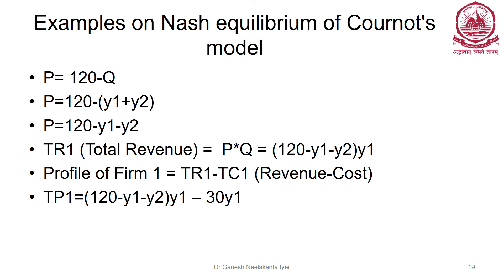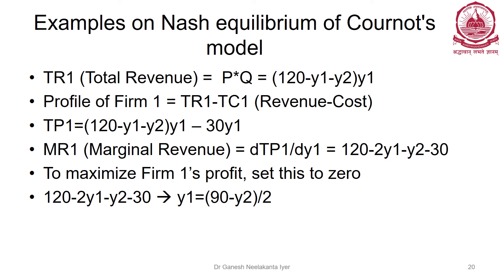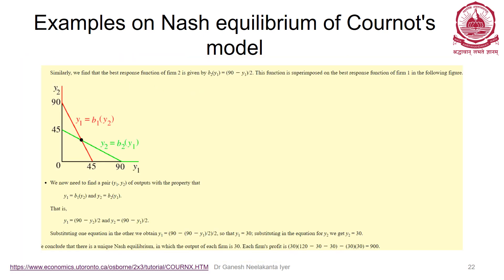Maximizing profit means taking the derivative of profit for firm one with respect to y1 and setting it to zero. Repeat the same for player two to get two equations and two unknowns, y1 and y2. Plot these two lines and their intersection gives the point where best response curves meet — the Cournot equilibrium. In this example, y1 = y2 = 30 and each company's profit equals 900. The URL given in this presentation has more examples and exercises — I strongly recommend you all go and practice.